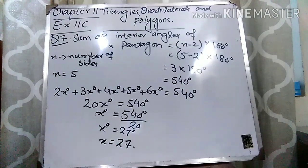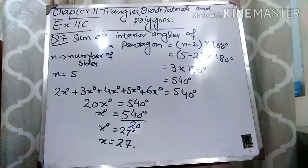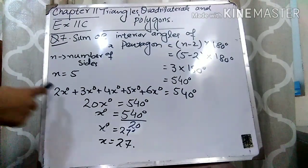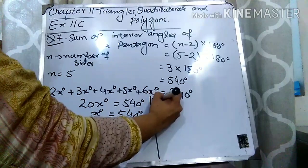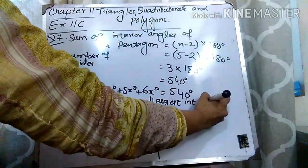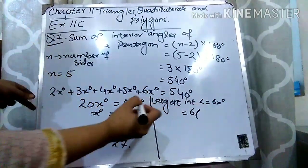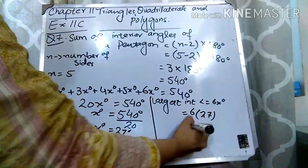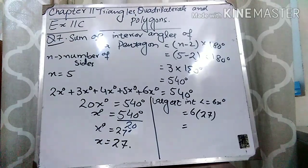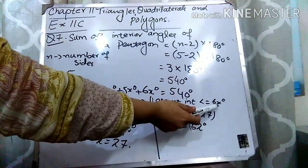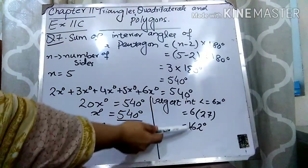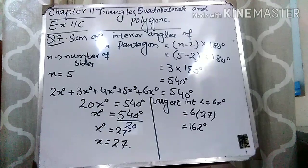The value of x is 27°. Now, the largest interior angle is 6x. Substituting x = 27: 6 × 27 = 162°. So the largest interior angle is 162°. I hope question number 7 is clear. Now let's move forward to question number 8.